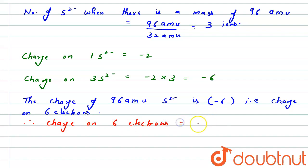Charge on 6 electrons will be 6 multiplied by the charge of 1 electron, which is 1.6 multiplied by 10 raised to power minus 19 coulomb. So after solving, we will get 9.6 multiplied by 10 raised to power minus 19 coulomb.